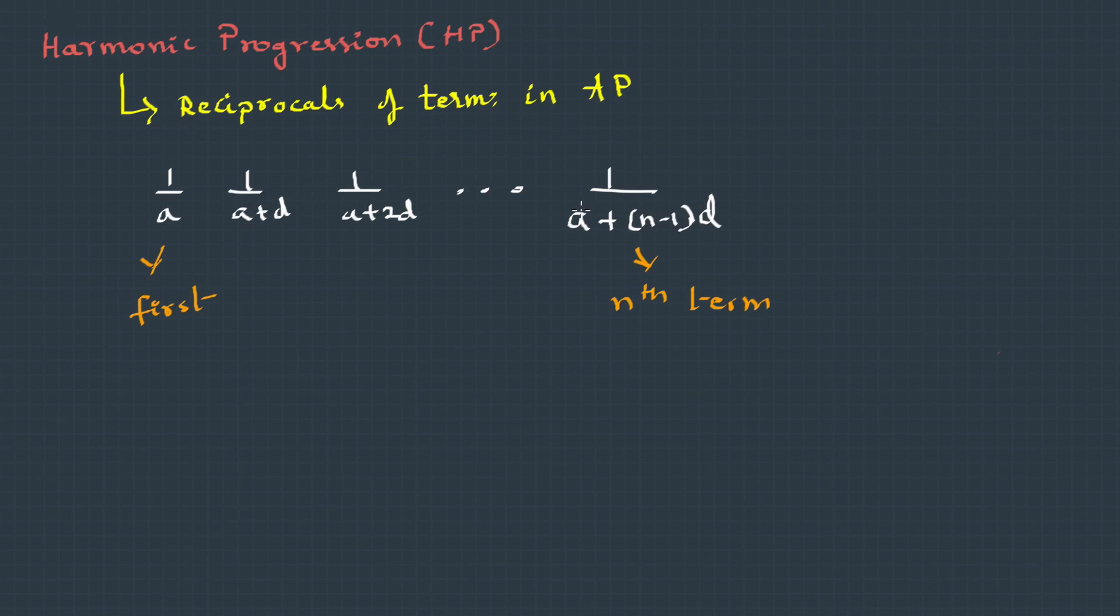Finding out the sum of n terms in harmonic progression is not defined, which means that there is no standard formula to calculate the sum of n terms. We need to do it manually.